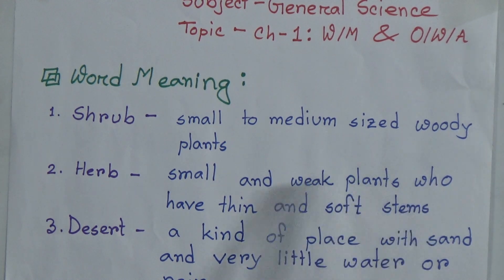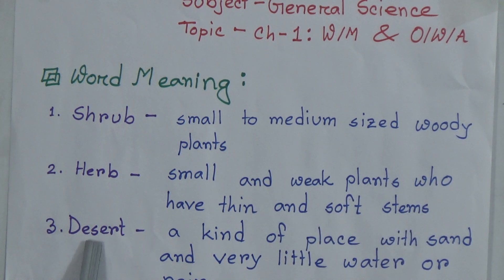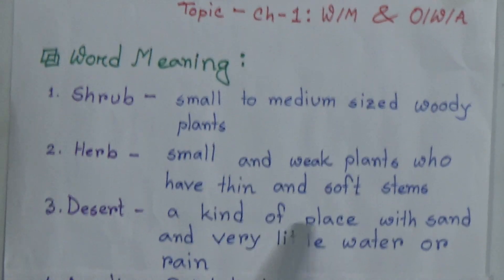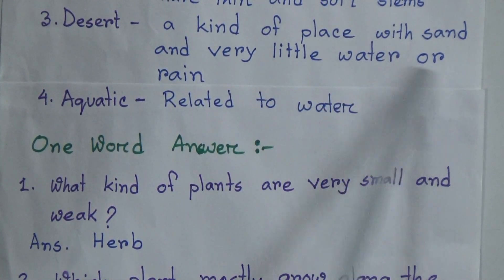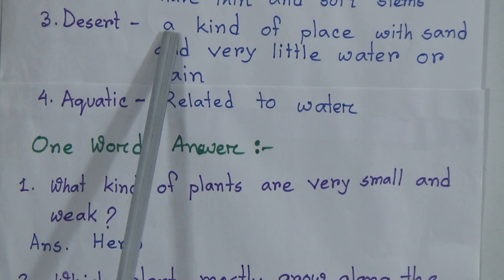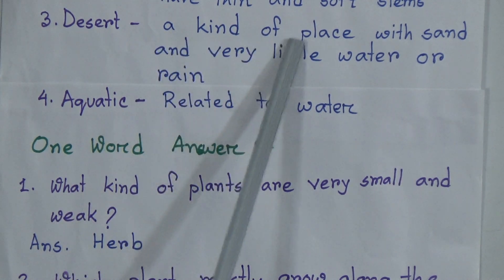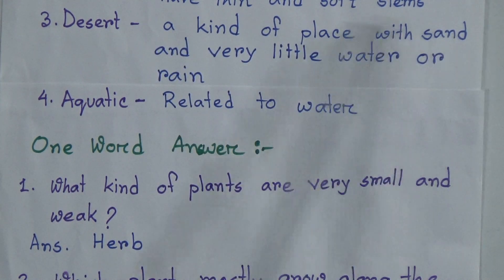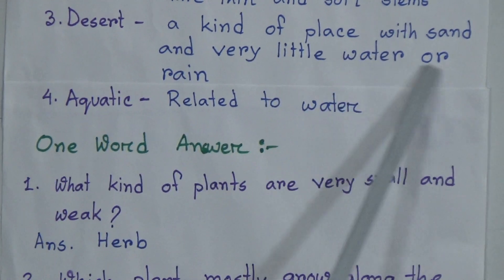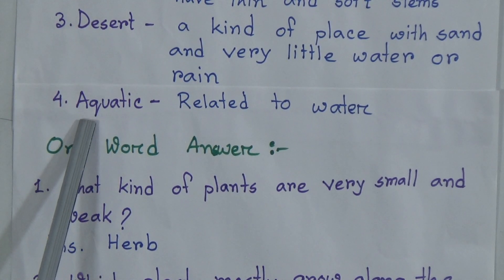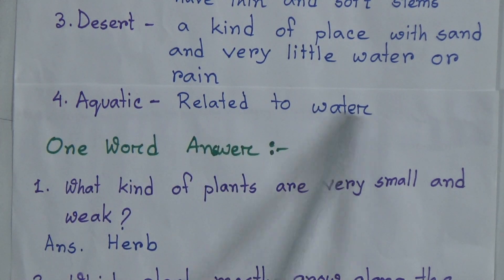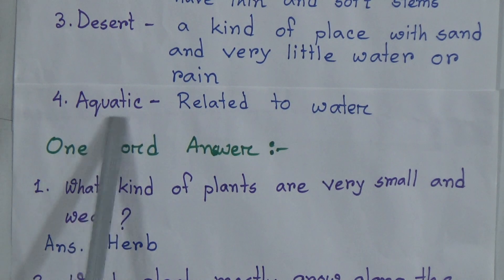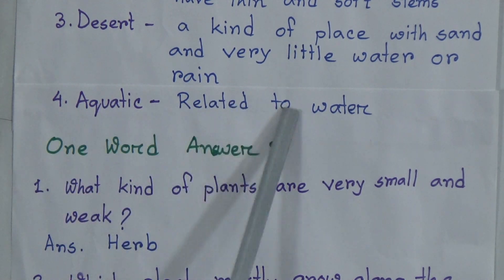Next word meaning: desert. Desert means a kind of place with sand and very little water or rain. Last word meaning from chapter 1 is aquatic. The meaning of aquatic is related to water.